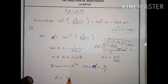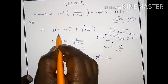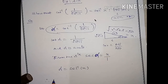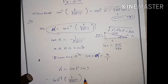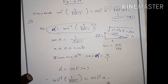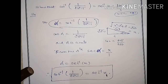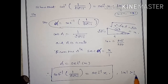Therefore, alpha equals secant inverse of x. Since alpha was defined as cot inverse of 1 by root of x squared minus 1, we conclude that cot inverse of 1 by root of x squared minus 1 equals secant inverse of x. This is the answer, where modulus of x is greater than 1.